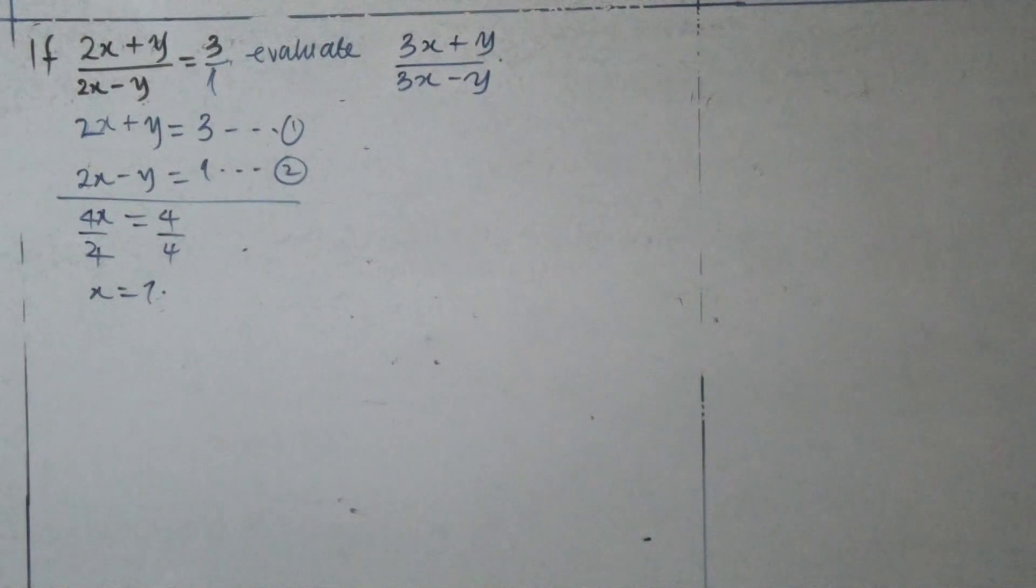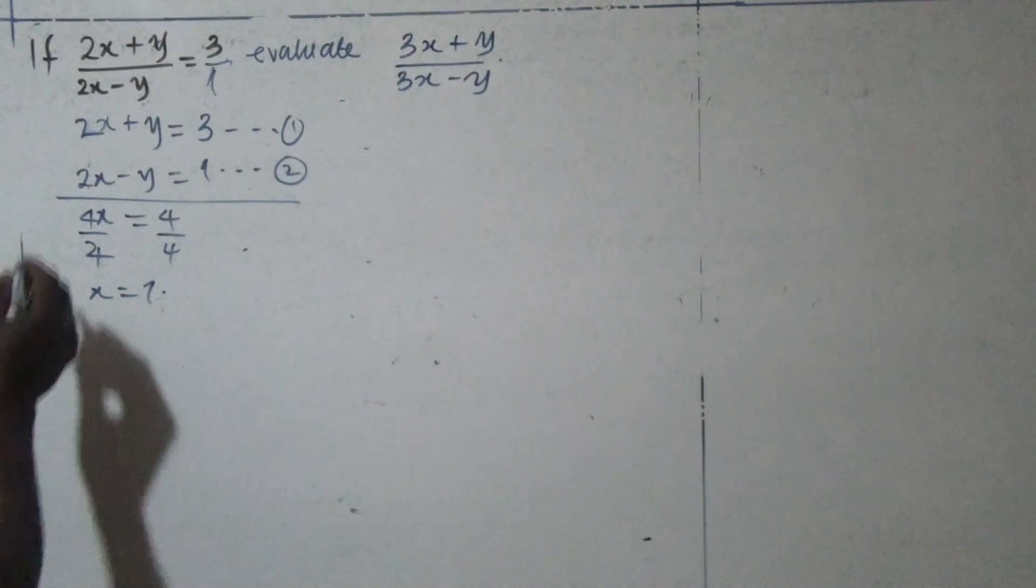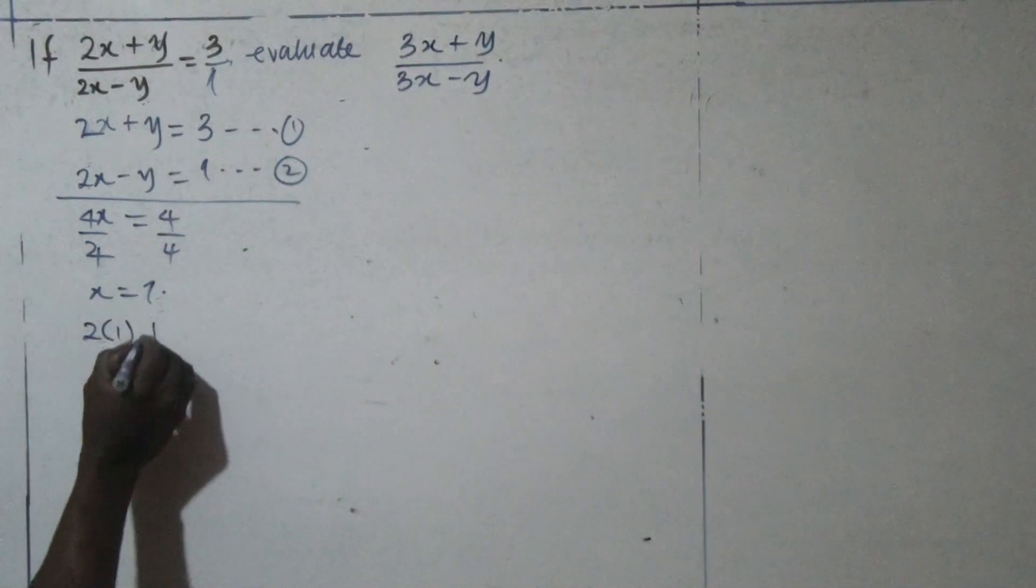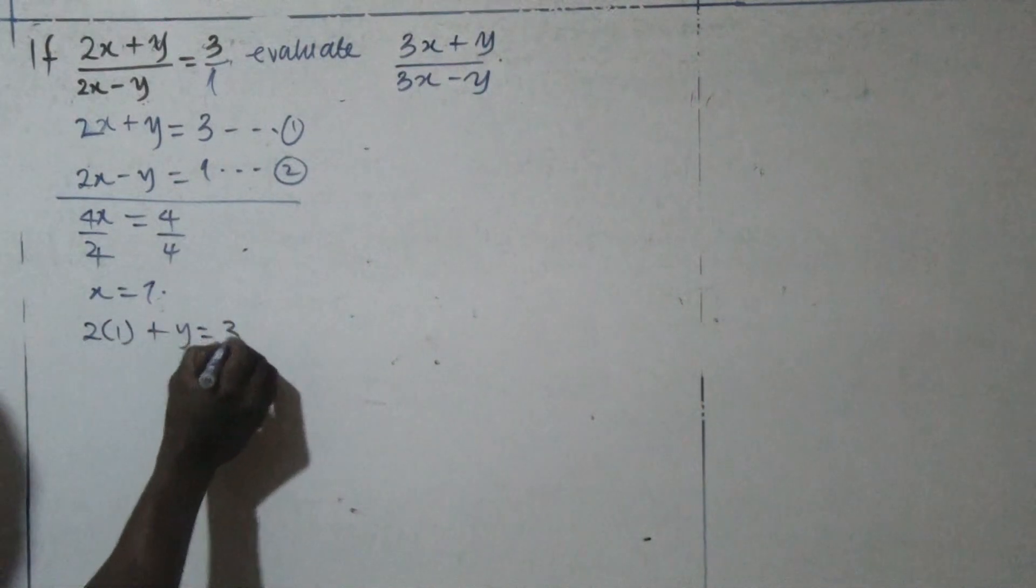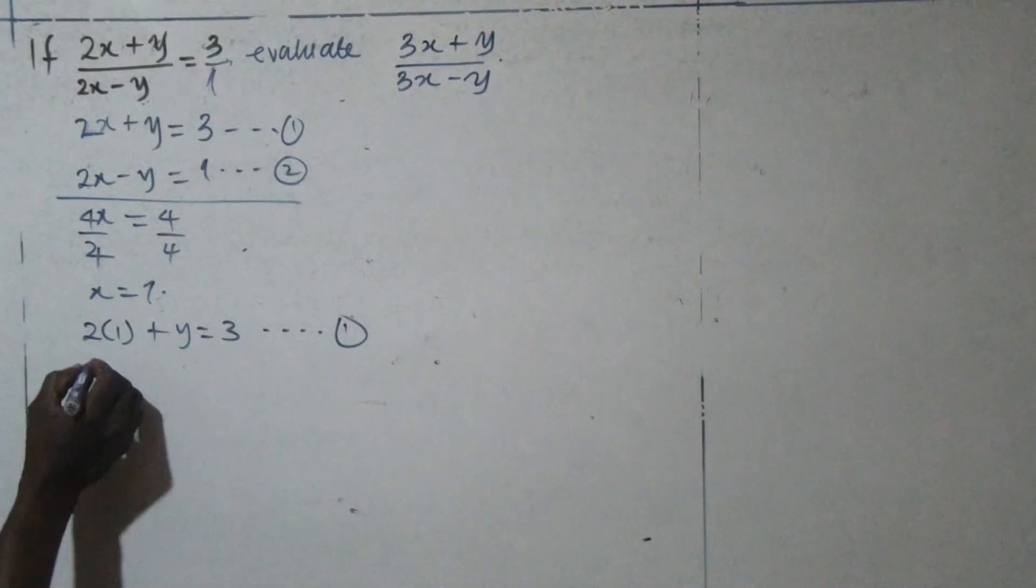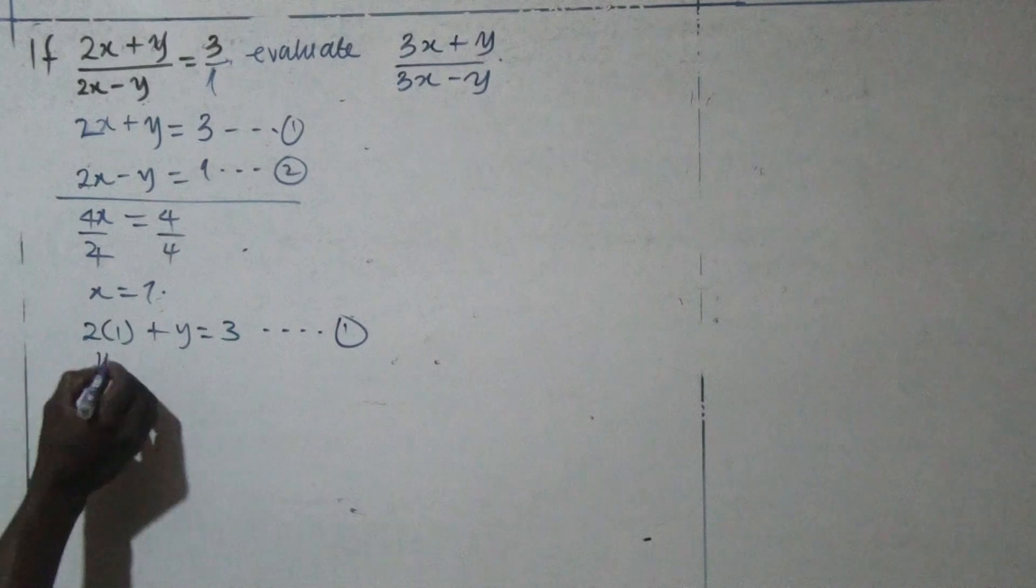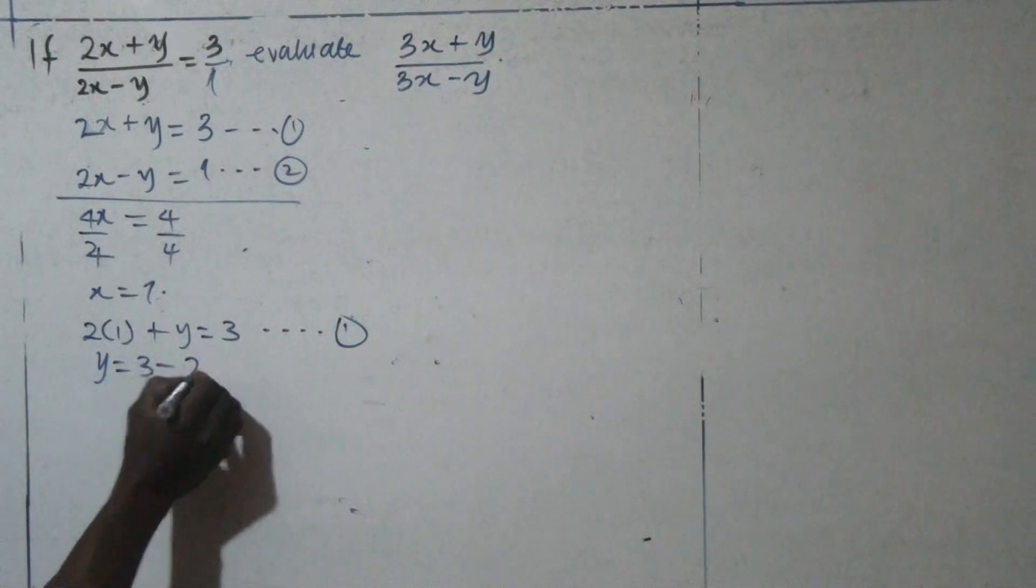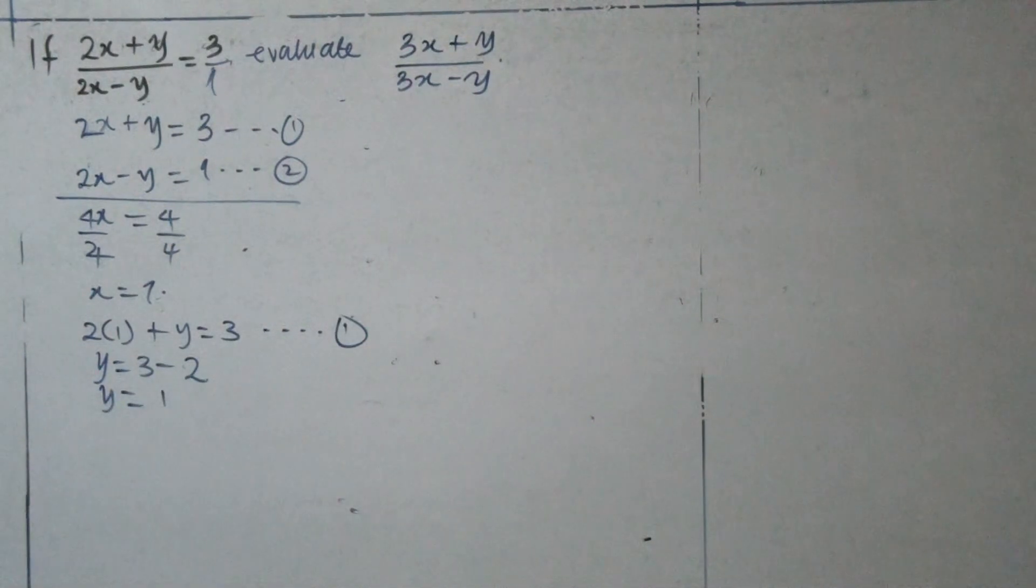Then, since we have obtained the value of x, we can substitute the value of x in either of the equations and obtain the value of y. Let's use equation 1. This is 2 times 1 plus y is equals 3. We're using equation 1 here. So, here, y is equals to 3 minus 2. And y is equals to 1.